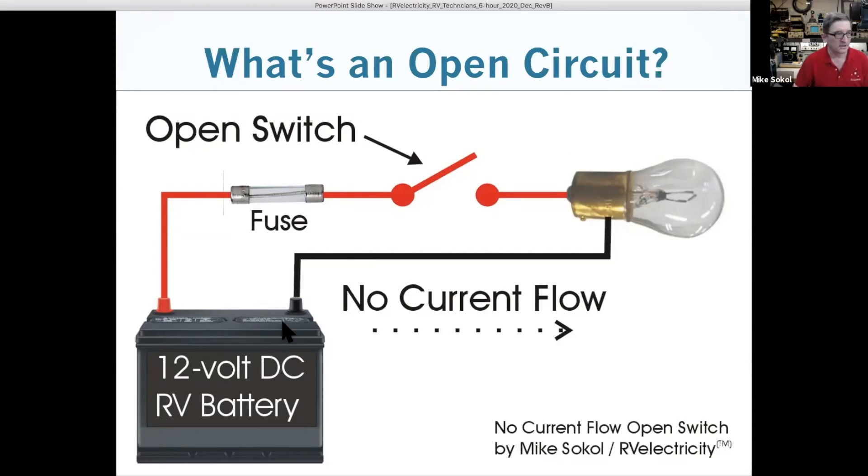First off, we have to understand what the complete circuit looks like. An open circuit: here we've got our battery, our bulb, an open switch, and a fuse. This is not a complete circuit, there's no current flowing. The bulb doesn't light.